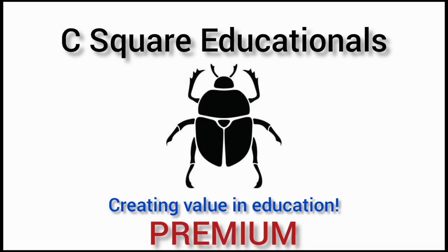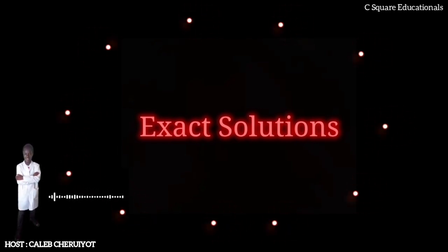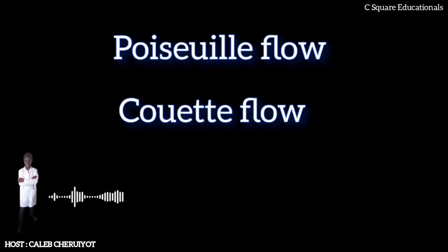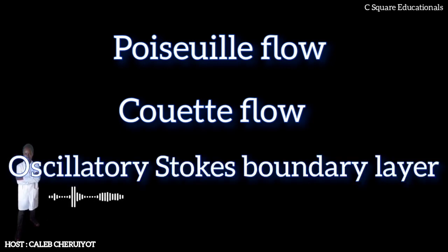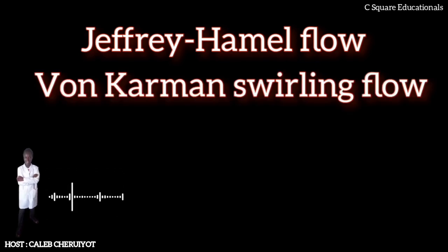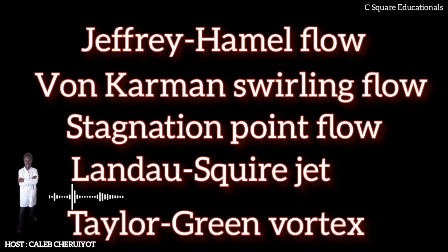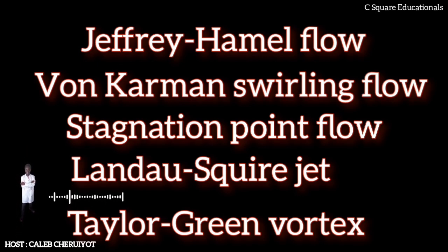Some exact solutions to the Navier-Stokes equations exist. Examples of degenerate cases where the non-linear terms equal zero include Poiseuille flow, Couette flow, and the oscillatory Stokes boundary layer. More interesting exact solutions to the full non-linear equation exist, such as Jeffrey-Hamel flow, Von Kármán–Bödewadt flow, stagnation point flow, Landau-Squire jet, and the Taylor-Green vortex. Note that the existence of these exact solutions does not imply that they are stable; for example, turbulence may develop at higher Reynolds numbers.